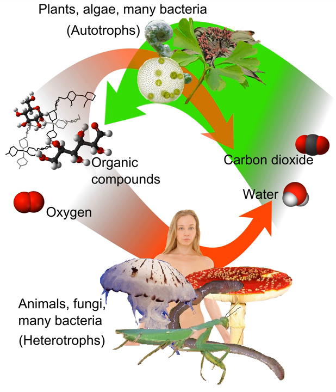Heterotrophs can be organotrophs or lithotrophs. Organotrophs exploit reduced carbon compounds as electron sources, like carbohydrates, fats, and proteins from plants and animals. Lithotrophs, on the other hand, use inorganic compounds, such as ammonium, nitrite, and sulfur to obtain electron sources. Another way of classifying different heterotrophs is by assigning them as chemotrophs or phototrophs. Phototrophs utilize light to obtain energy and carry out metabolic processes, whereas chemotrophs use the energy obtained by the oxidation of chemicals from their environment.